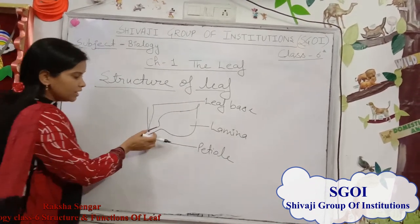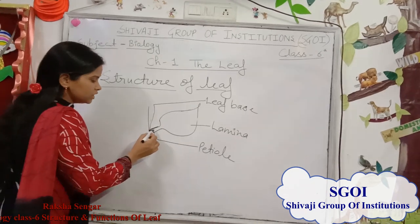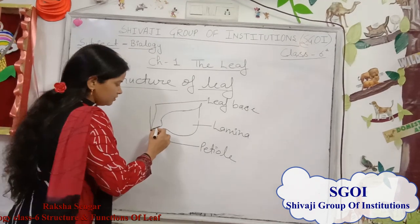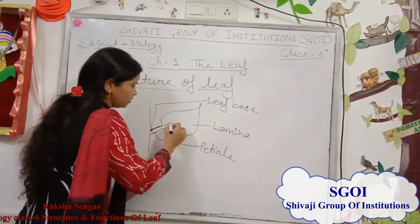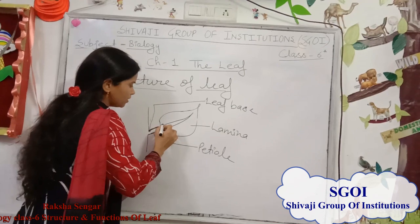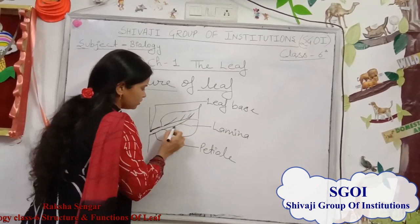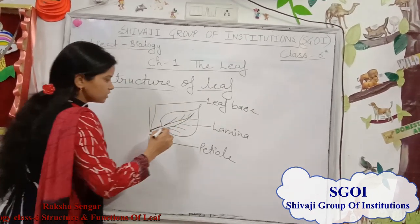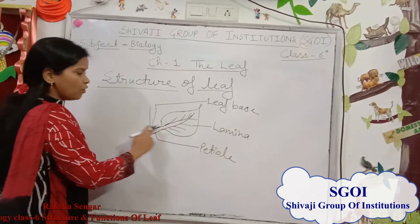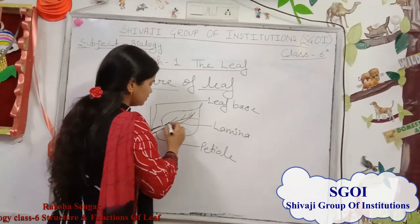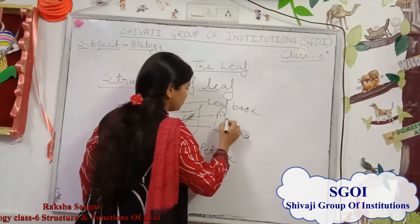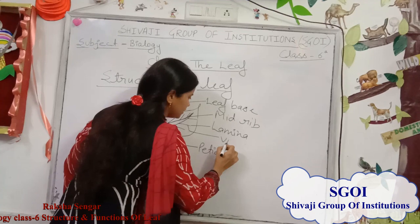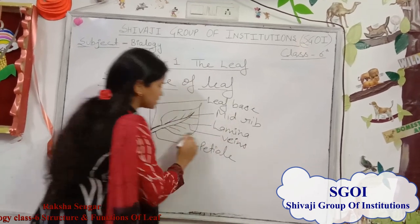The stalk-like structure you can see here is called the petiole. Generally, when you pluck the leaf, you hold it from the petiole. From the petiole, it arises and forms a network-like structure over the lamina. This network-like structure is called venation. The middle portion is called the midrib, and the side structures are called veins or side veins.